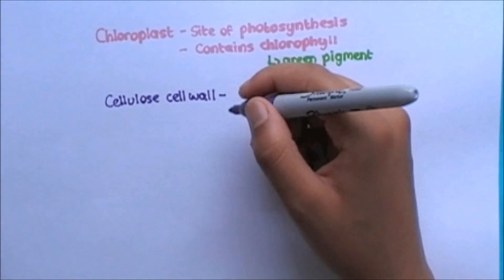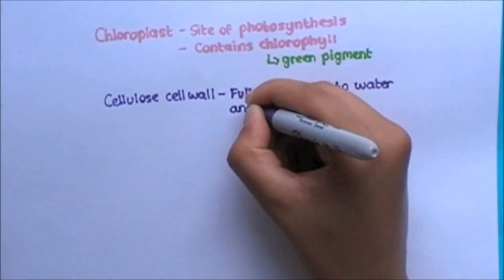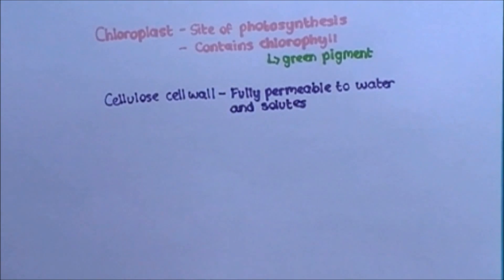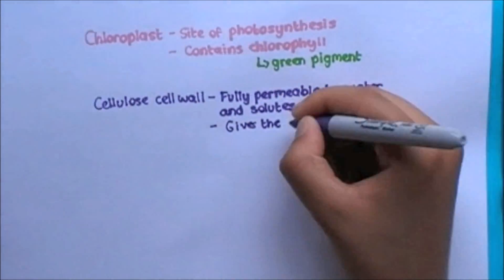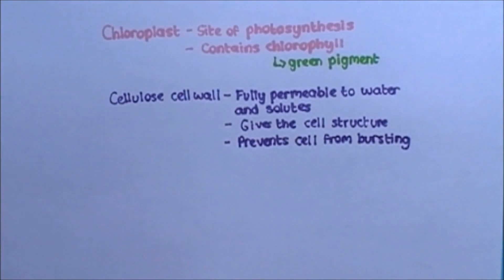The cellulose cell wall is fully permeable to water, unlike the cell membrane we saw earlier, and it gives the cell its structure. The cell wall also prevents the cell from bursting, which is, I'm sure you will agree, a pretty important feature to have.